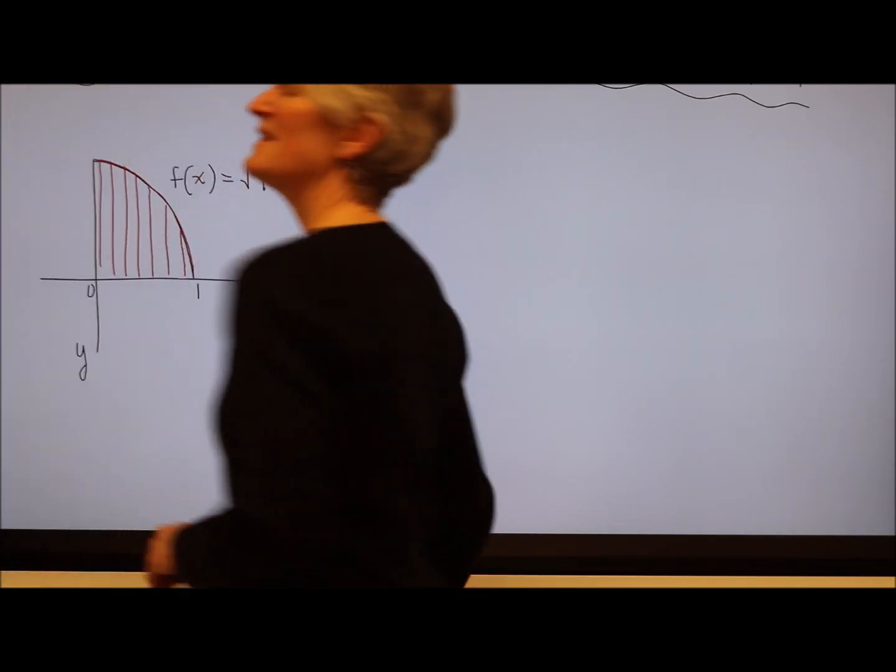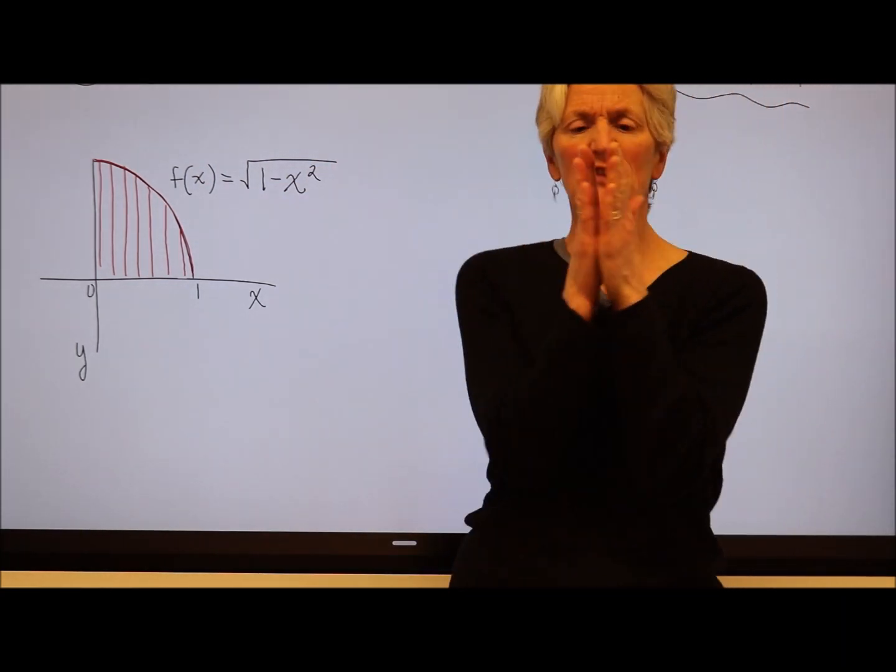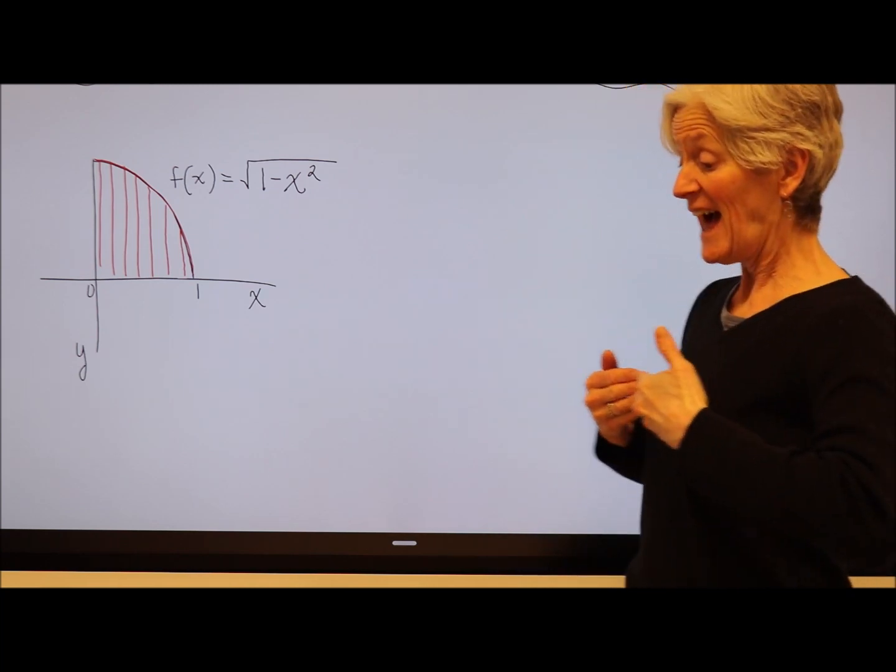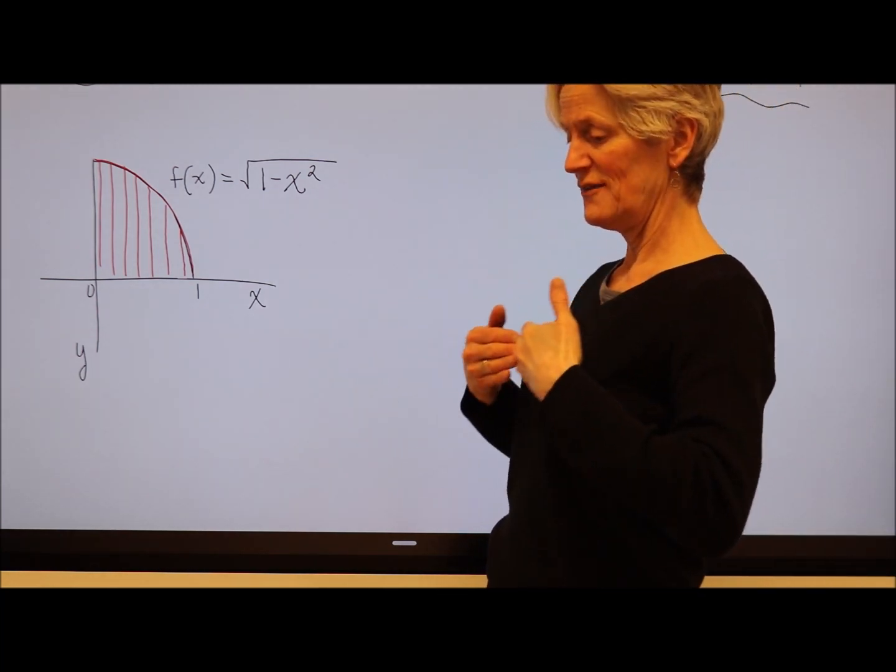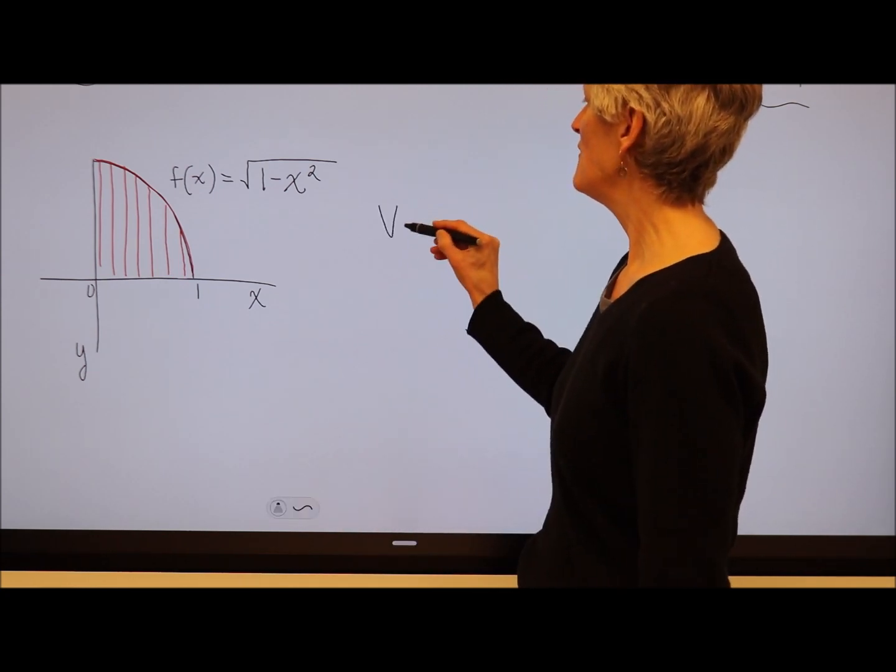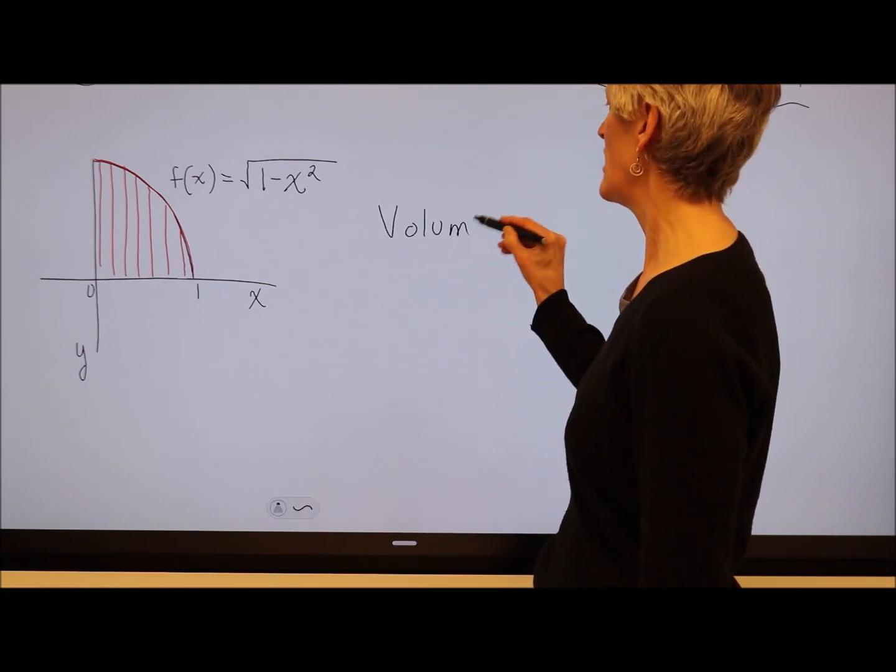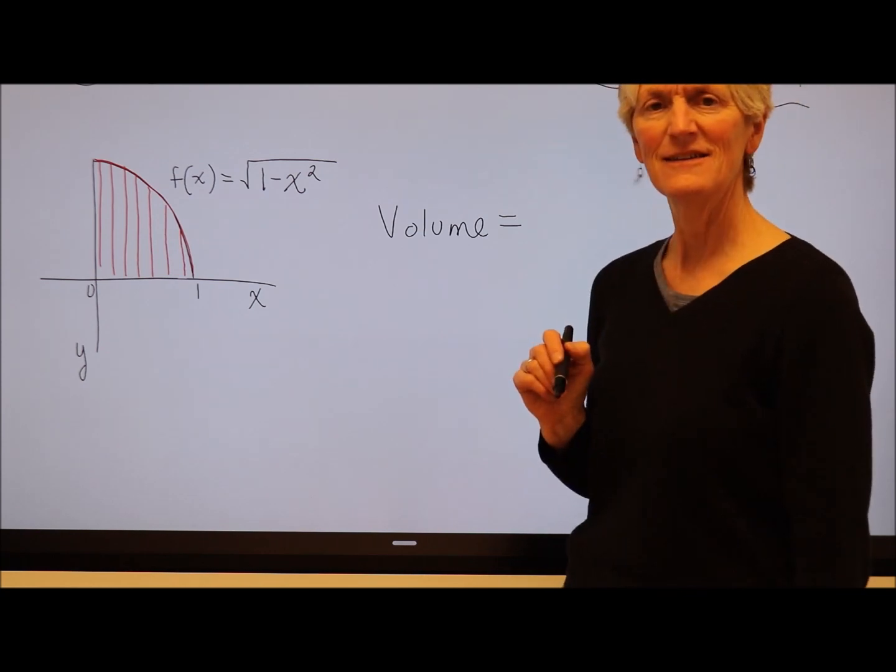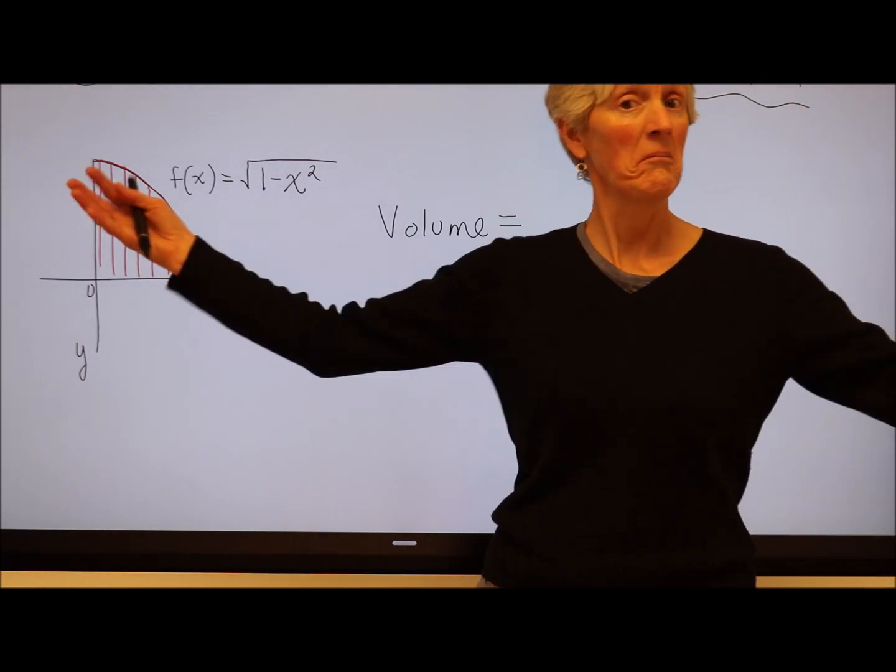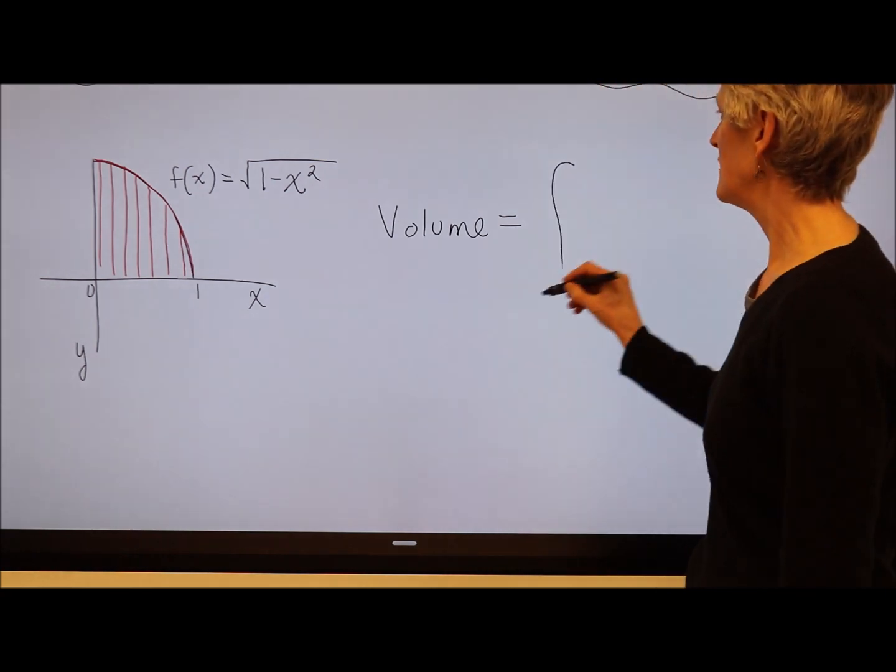Don't you think that if we could find the volume of each one of those little square slices, and then if we add it up, all of those square slices, that would give me the volume of this three-dimensional shape? Yeah. How do we add together an infinite number of things? Using an integral, of course.